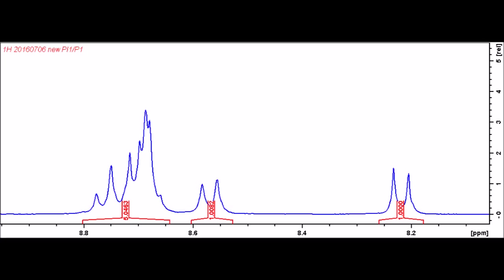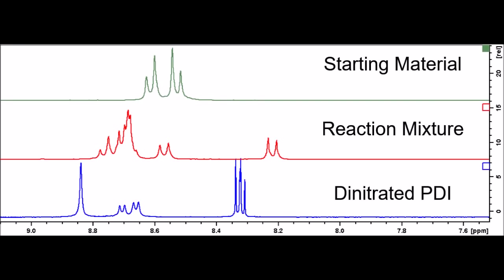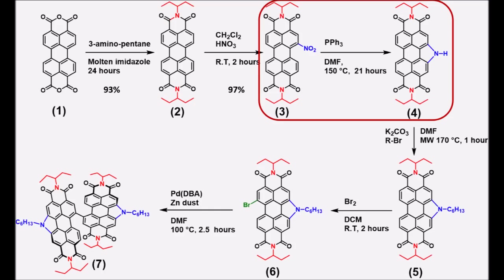This is evidence that we have either the mononitro PDI or a roughly equal mixture of non-nitrated and dinitrated PDI. To confirm that we have only mononitro PDI, we can compare the spectrum to that of the starting material on top and dinitrated PDI which I accidentally made previously on bottom. By comparing the peaks, we see that peaks at 8.45 characteristic of the starting material are not present in the product and that peaks at 8.3 characteristic of dinitrated PDI are also not present in the product.